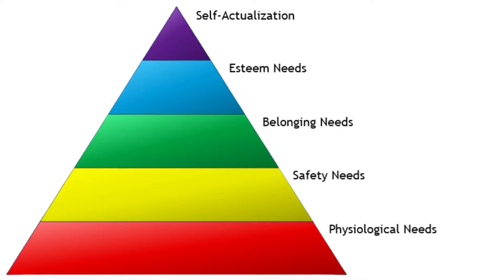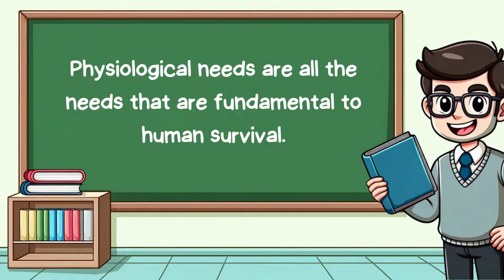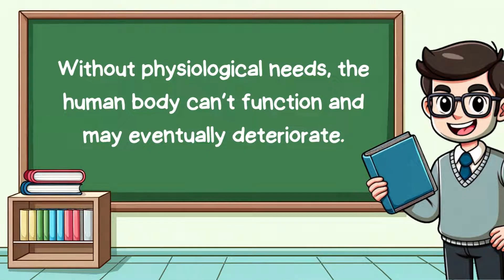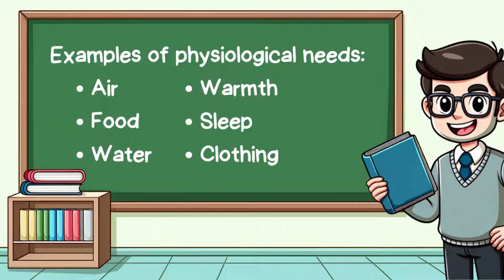The base level on the hierarchy is physiological needs. This level encompasses all the needs that are fundamental to human survival. Without these, the human body cannot function properly and may eventually deteriorate. Examples of physiological needs include air, food, water, warmth, sleep and clothing. These are the most primal needs and take precedence over all other levels of needs.